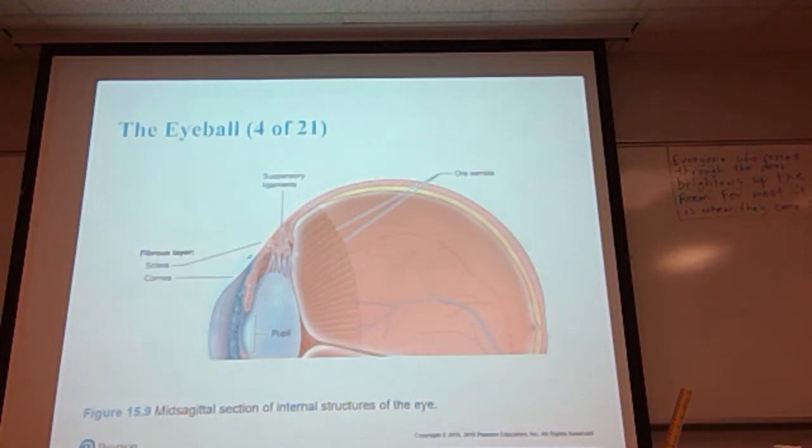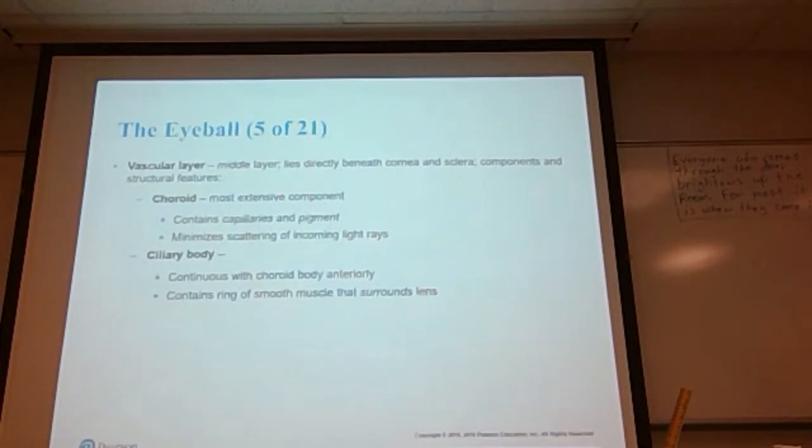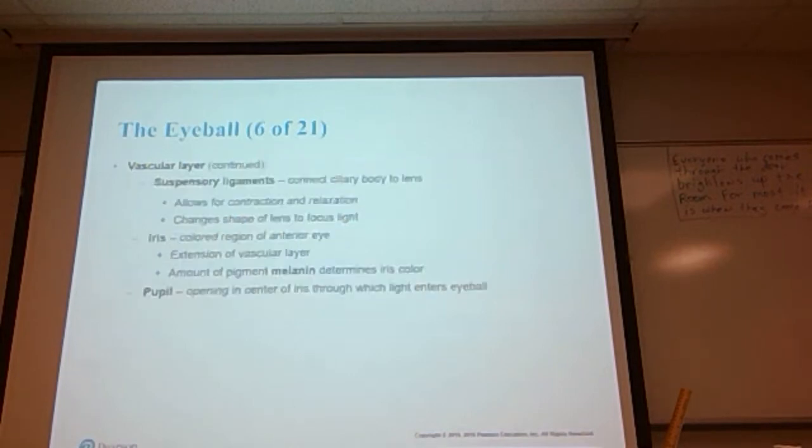The vascular layer or middle layer lies directly beneath the cornea and the sclera. The components of this structural feature are: the choroid, the most extensive component containing capillaries and pigments that minimize scattering of internal light rays; and the ciliary bodies, which are continuous with the choroid body and contain rings of smooth muscle that surround the lens. This is the area that gives a changing shape to the lens.